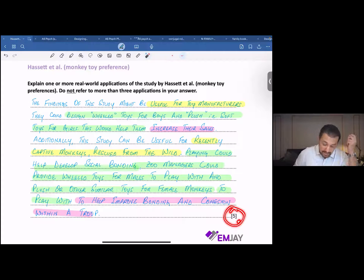The findings of the study might be useful for toy manufacturers. Now, there are two points that have been chosen over here. Number one, how the findings of this study or what we've learned from this particular study could help toy manufacturers. Number two, how the findings of the study or the study itself could help captive monkeys.